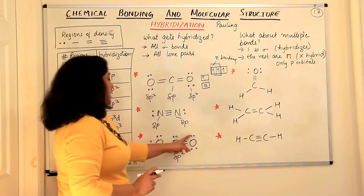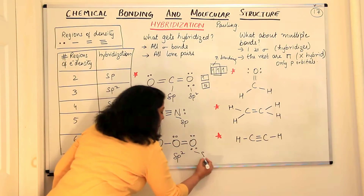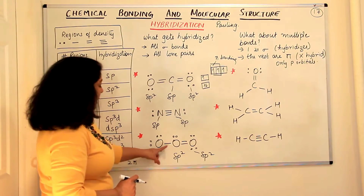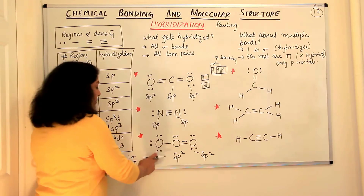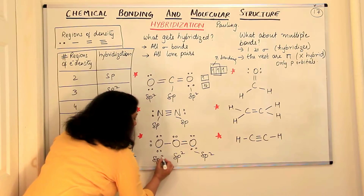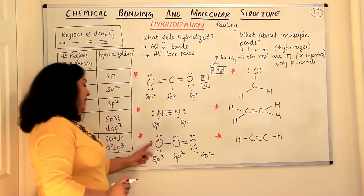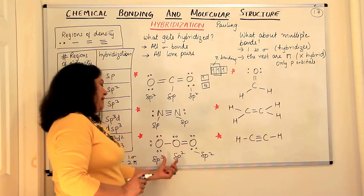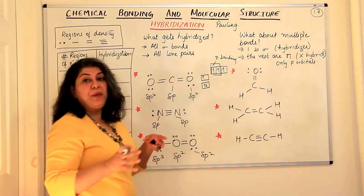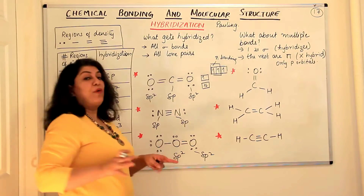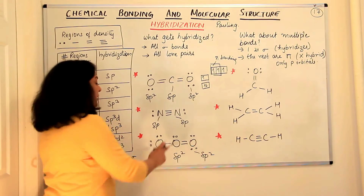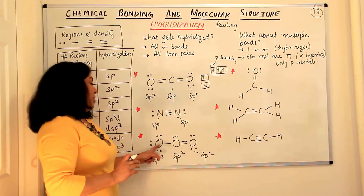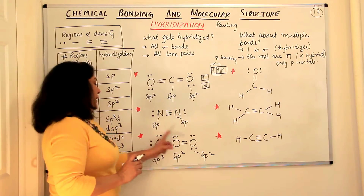The next oxygen in ozone also has three regions of electron density, so it is also sp2 hybridized. The third oxygen has three lone pairs and one sigma bond — four regions of electron density — so it is sp3 hybridized. The central sp2 atom has three electron pairs pointing to the corners of a triangle, but since one is a lone pair, the molecule appears angular.